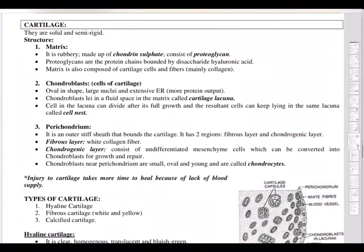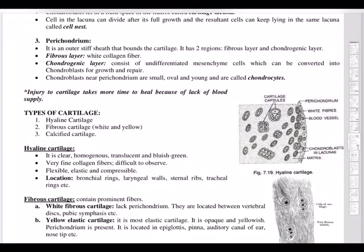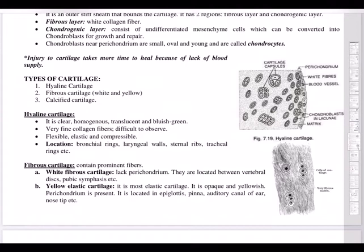Cartilage is a solid and semi-rigid tissue made up of three components: matrix, chondroblasts, and perichondrium. The matrix is rubbery, made up of chondroitin sulfate, and consists of proteoglycans. Chondroblasts are the cartilage cells, and the perichondrium is the outer stiff sheath that surrounds the cartilage. Injury to cartilage takes more time to heal because of a lack of blood supply.